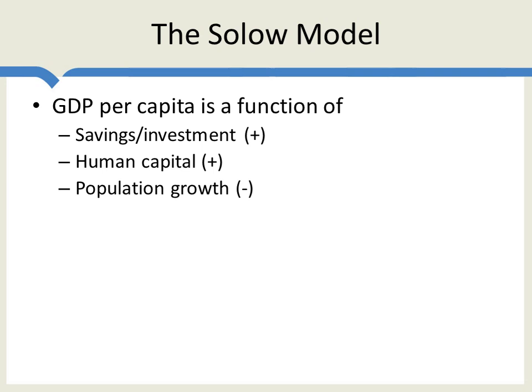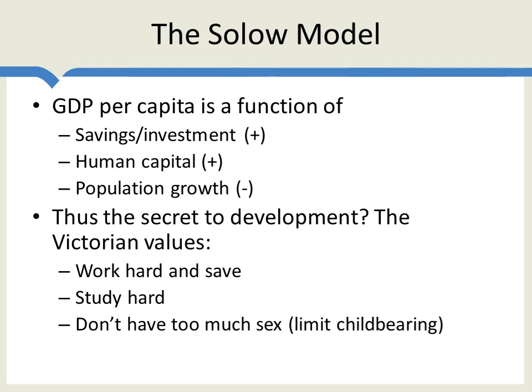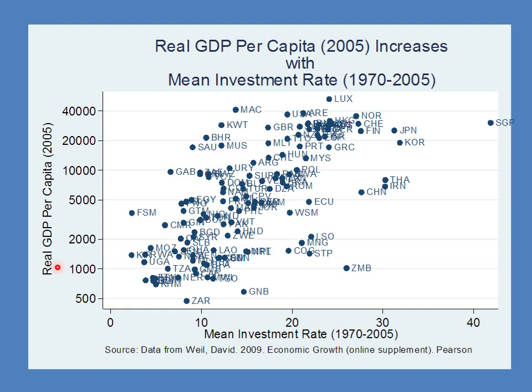From our previous lectures, we know that in the Solow model, GDP per capita is a positive function of savings or investment, a positive function of human capital, and a negative function of population growth. The secret to development is quite simple — what Bill Easterly has called the Victorian values: work hard and save, study hard, and limit childbearing. Let's see whether these predictions hold up in the data.